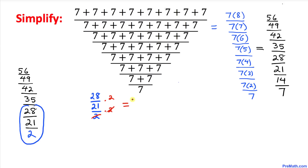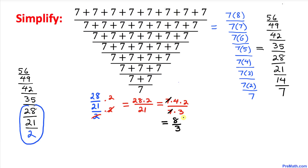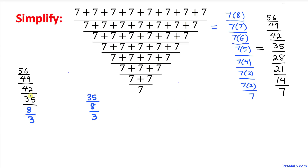So we end up with 28 times 2 divided by 21. Simplifying further: 28 can be written as 7 times 4, times 2, and 21 can be written as 7 times 3. The 7s cancel, so we end up with 8 over 3. I am going to replace these numbers with 8 over 3.